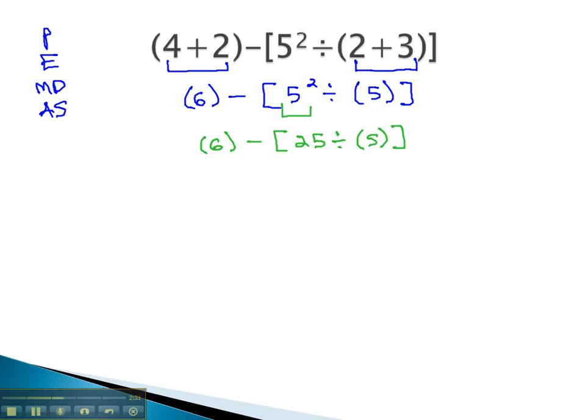And finally we're now ready to finish the parentheses by dividing. We now have six minus twenty-five divided by five is five, and we're almost done. Six minus five is one. So we start with the innermost parentheses, and using order of operations, we work out.